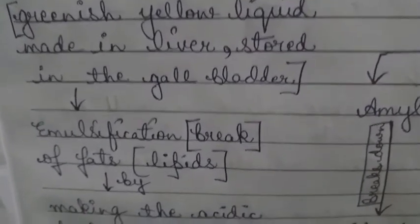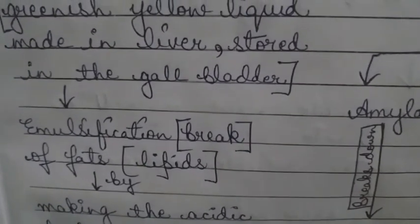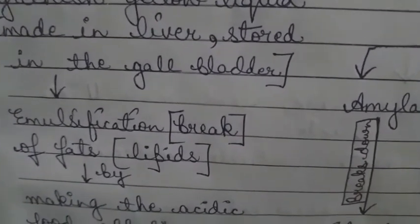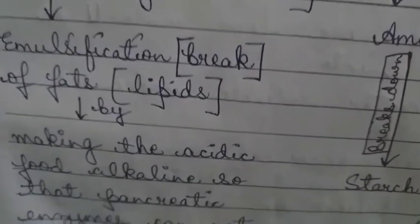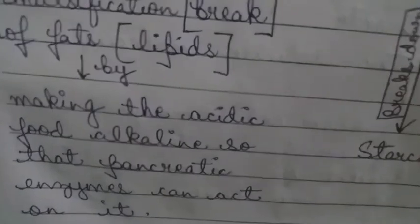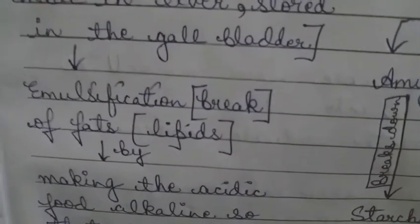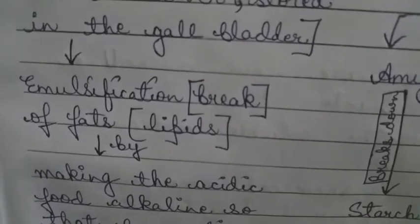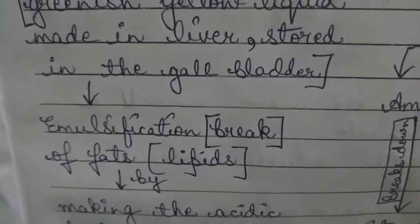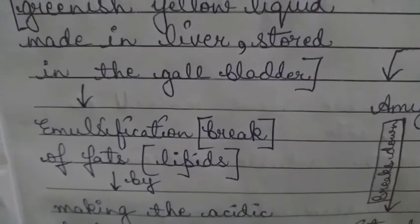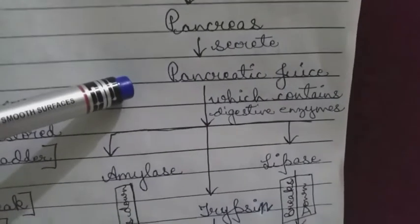The bile juice converts acidic food into alkaline, so that pancreatic enzymes can act on it. Once the food becomes alkaline, pancreatic enzymes can easily act on it, causing further breakdown of our food.